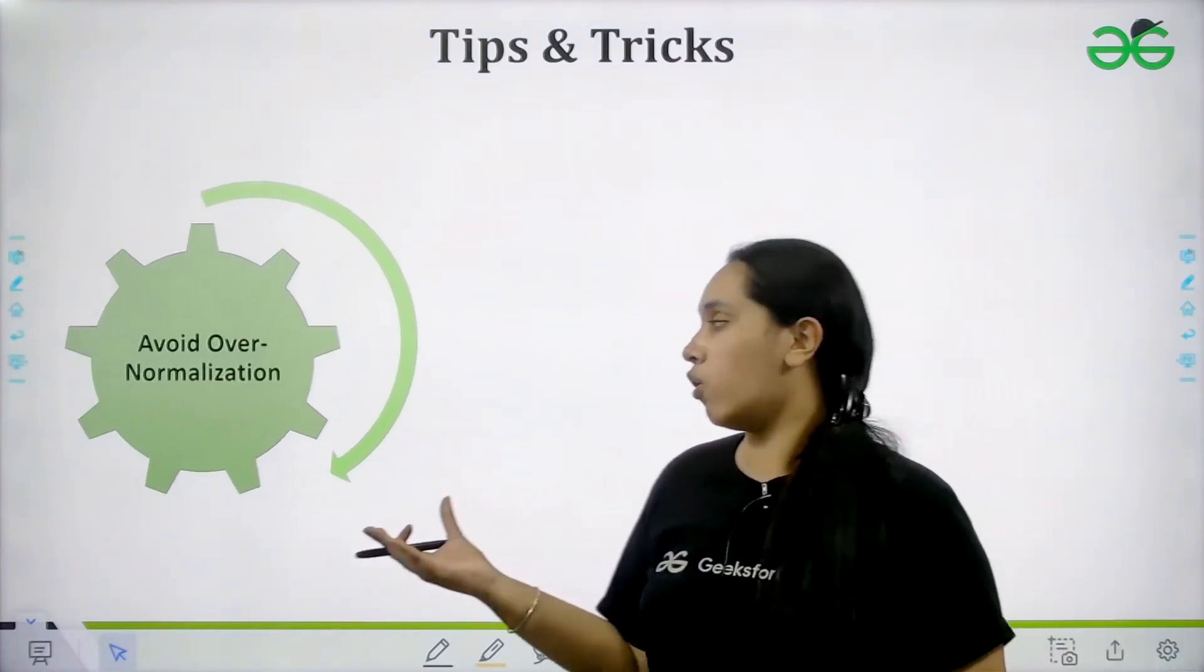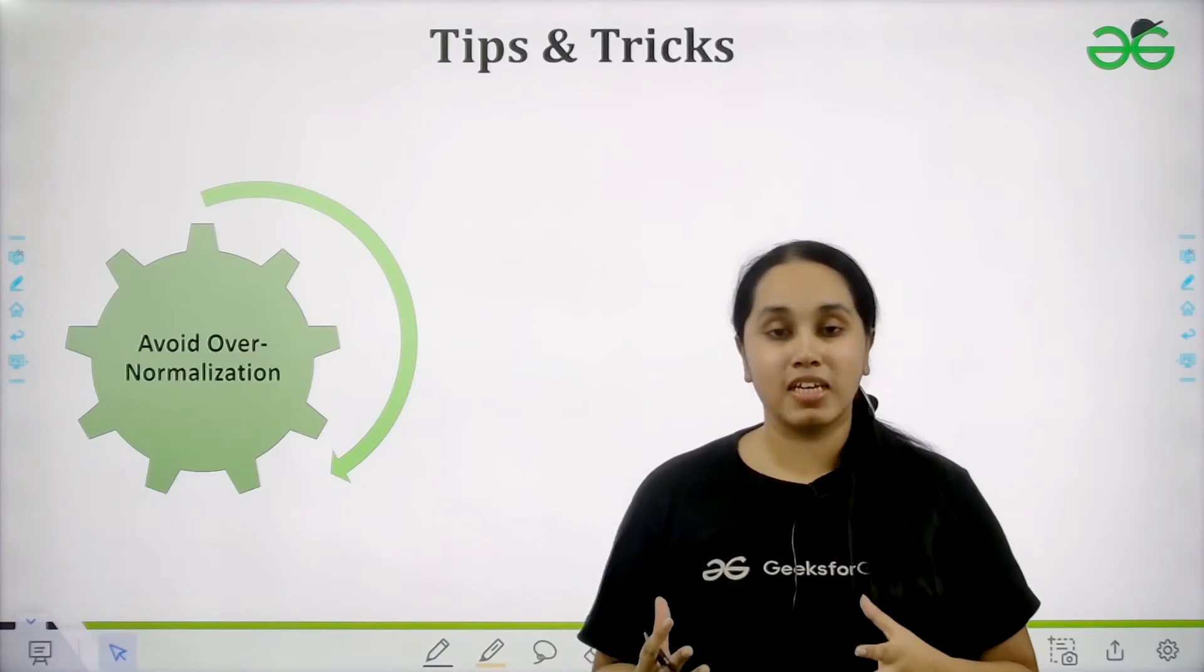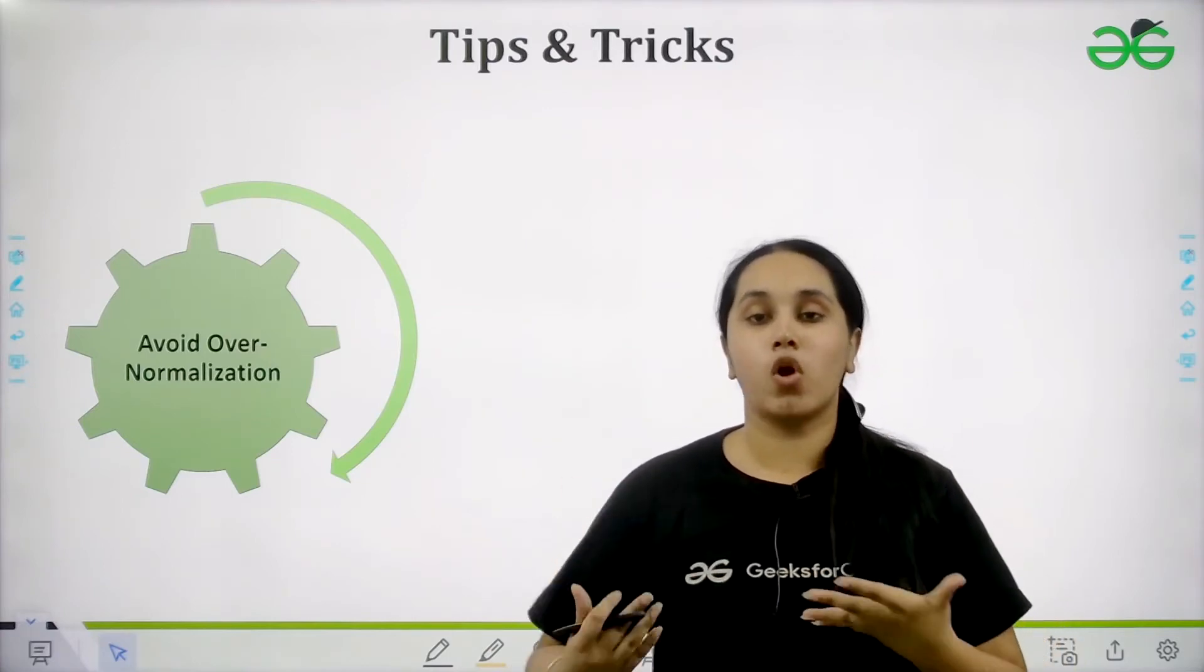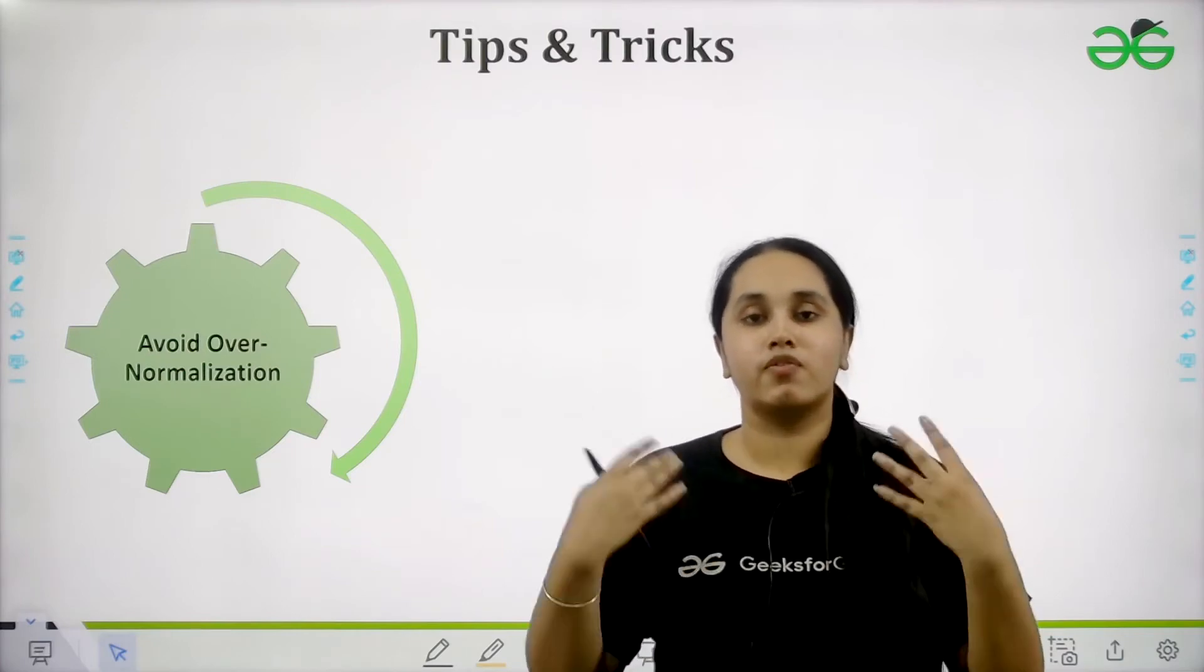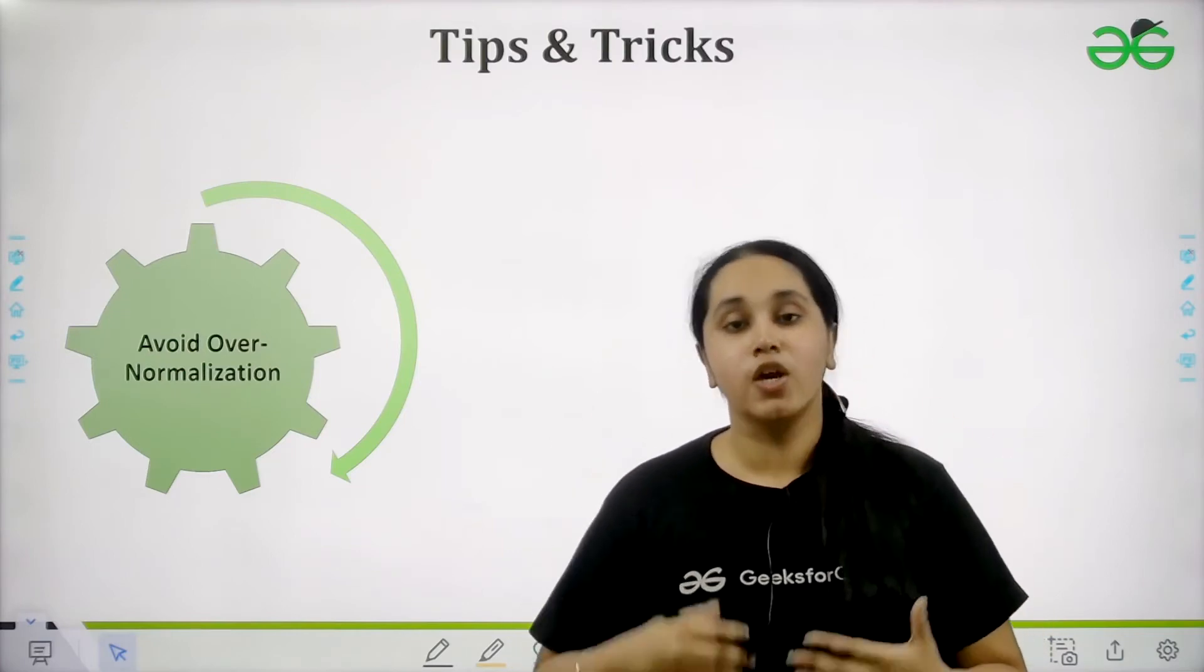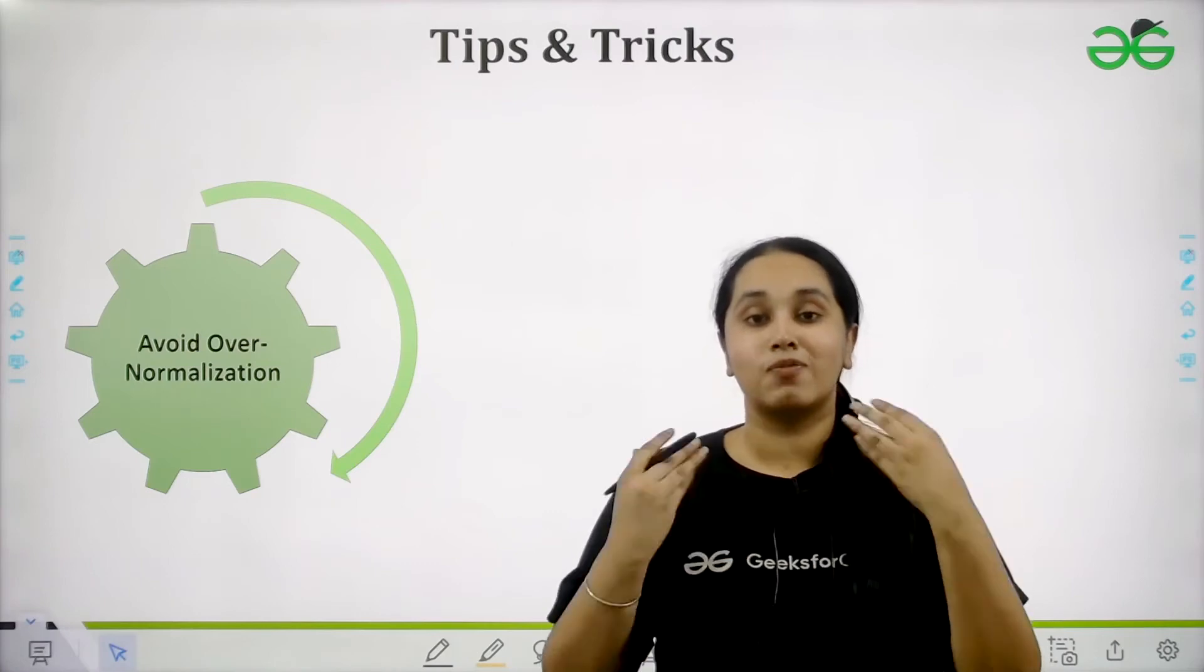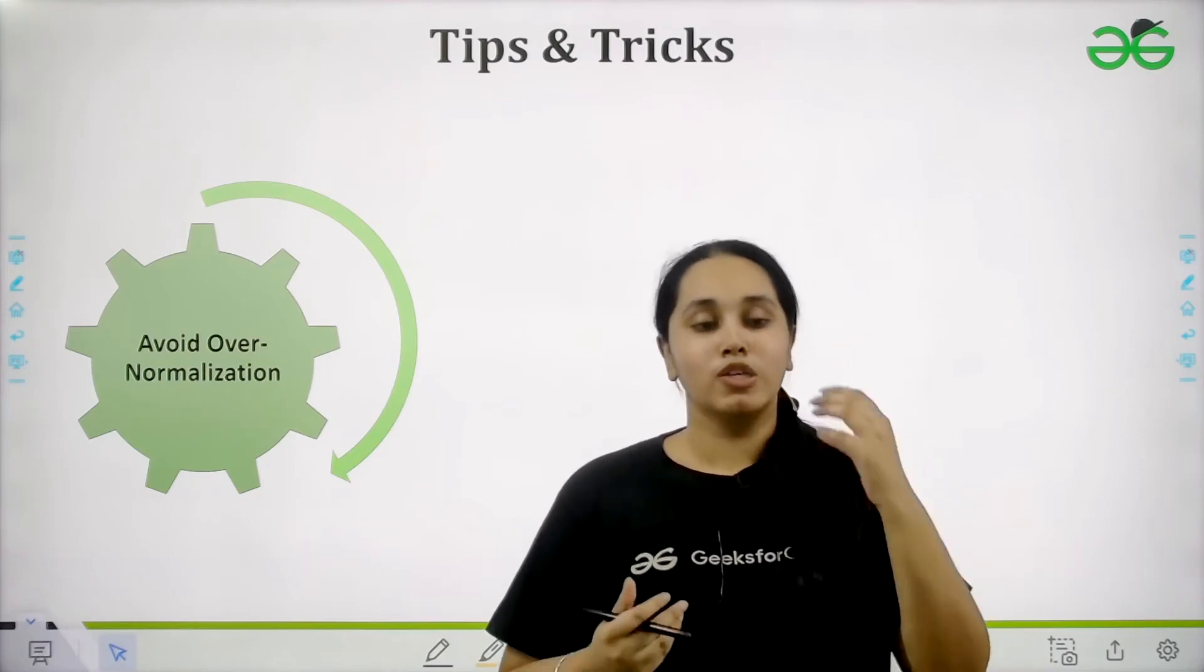Avoid over normalization. Normalization, but don't overdo it. There are many normalization forms, like 0NF, 1NF, 2NF, 3NF, 4NF, 5NF. Don't over normalize. It would get very difficult for you. So avoid that.